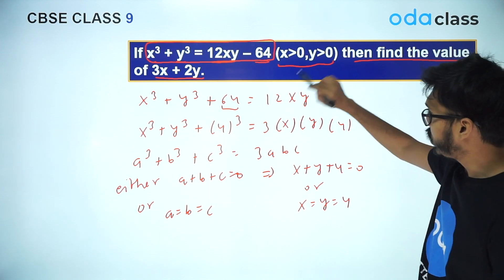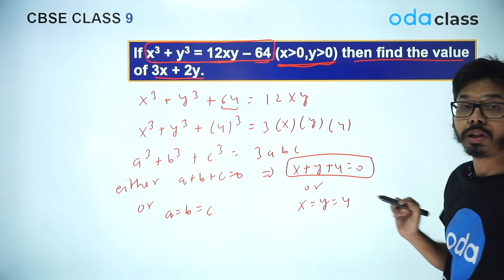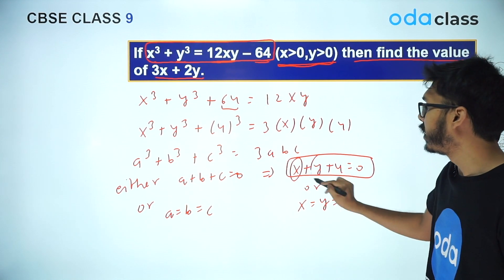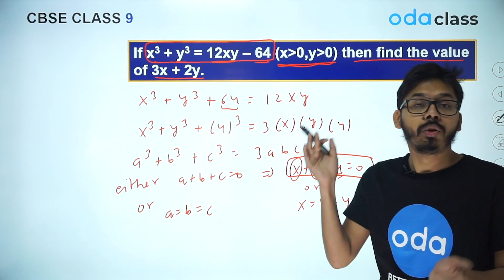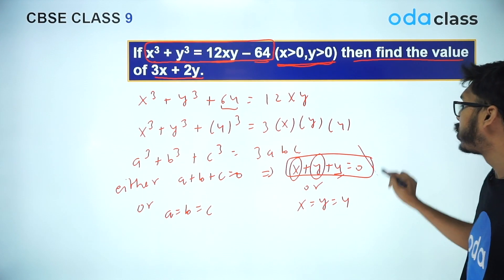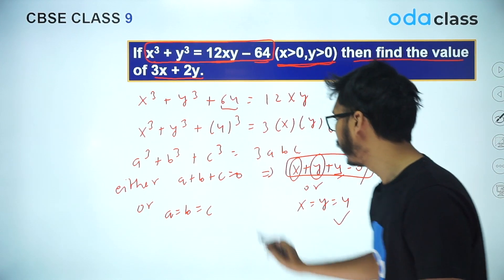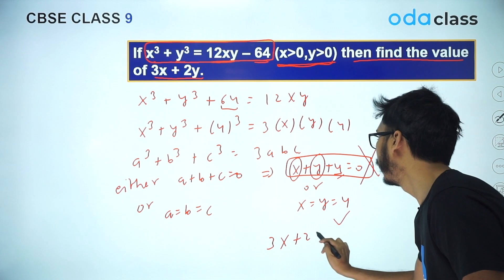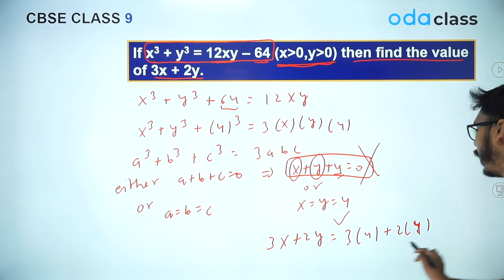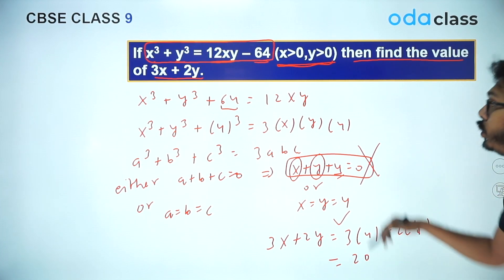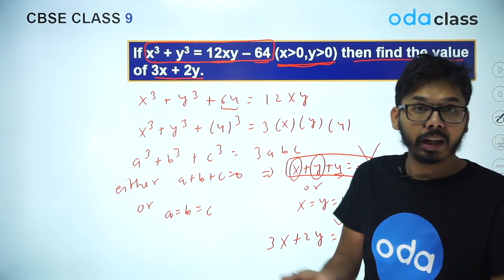From the two results, and the additional information that x > 0 and y > 0: x + y + 4 = 0 cannot be zero because x is positive, y is positive, and you're adding 4 — two positive quantities plus 4 cannot be zero. So that is ruled out. The only possibility is x = y = 4. We are looking for 3x + 2y, so plugging in: 3×4 + 2×4 = 12 + 8 = 20.